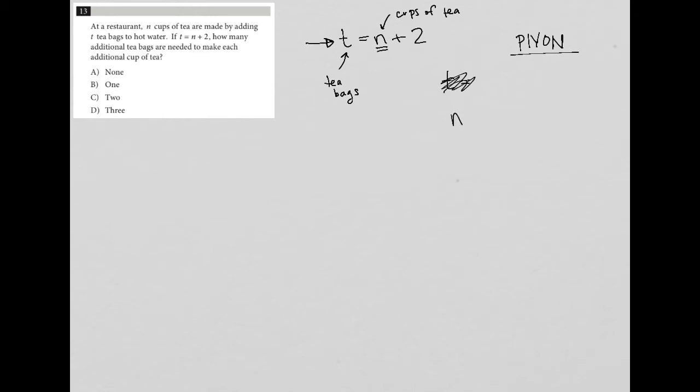So if I only wanted one cup of tea, that means T would have to equal 3. Because T is equal to n plus 2. In this case, it would be 1 plus 2, so T equals 3.